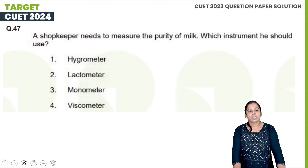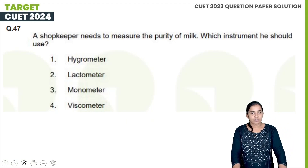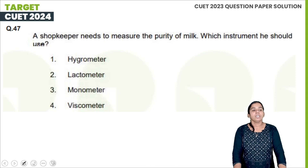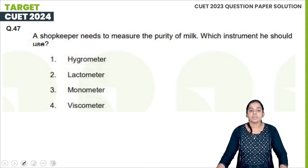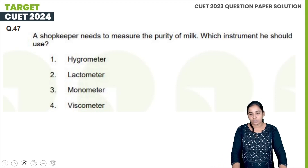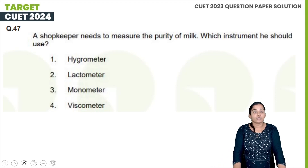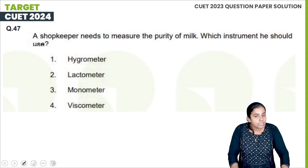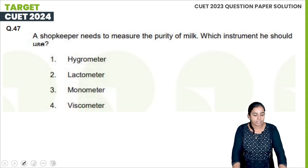Next question: A shopkeeper needs to measure the purity of milk. What instrument should he use? The answer is a lactometer.